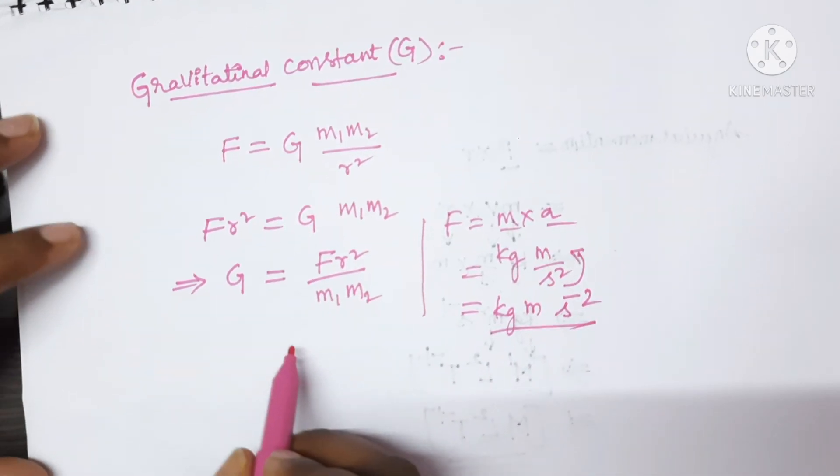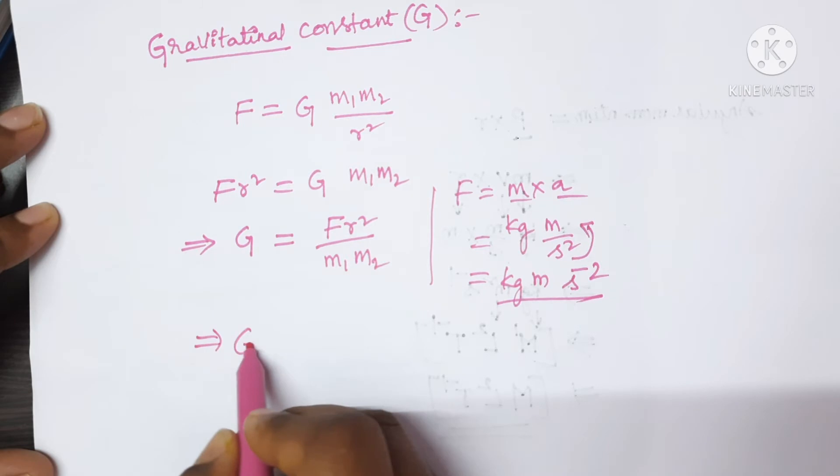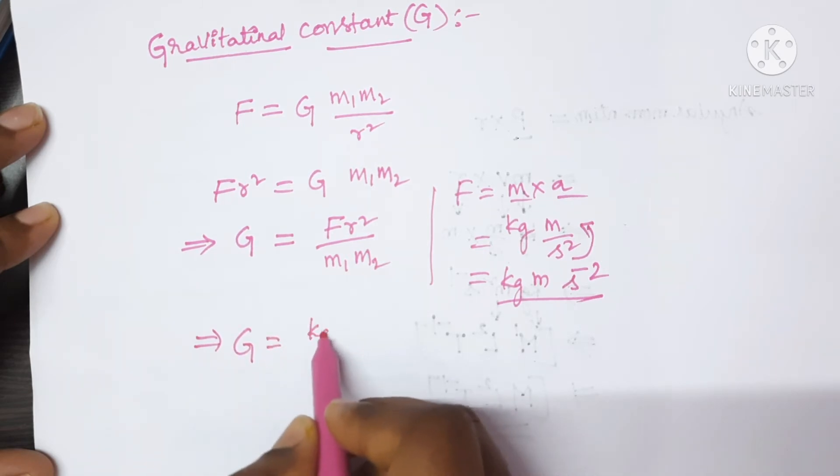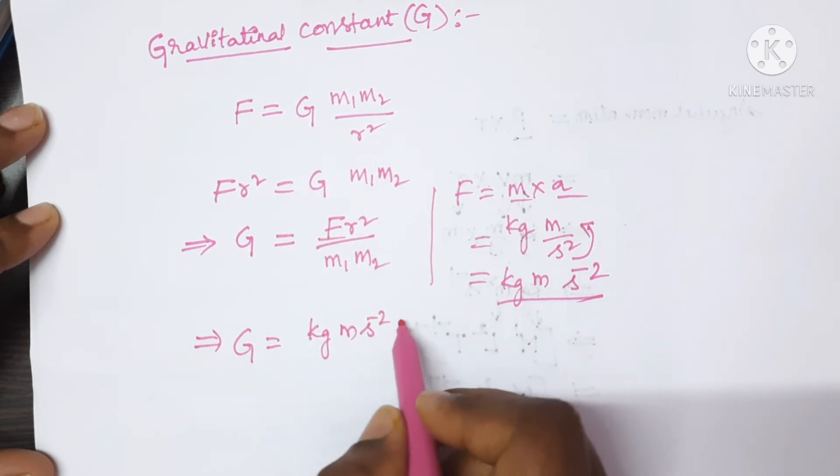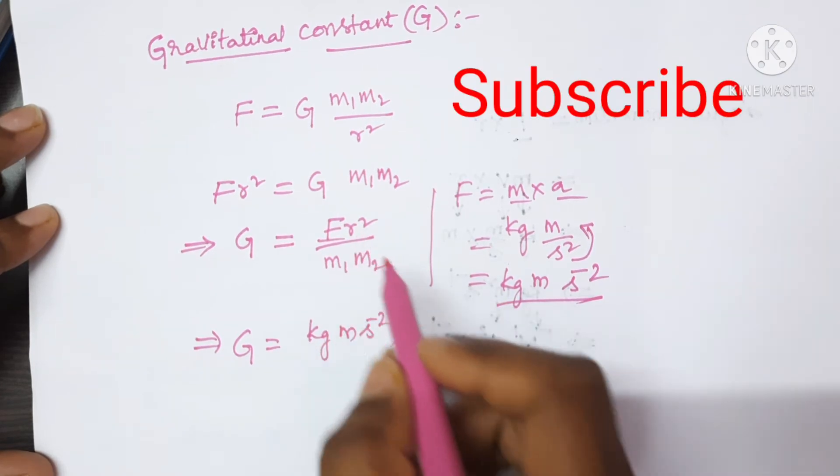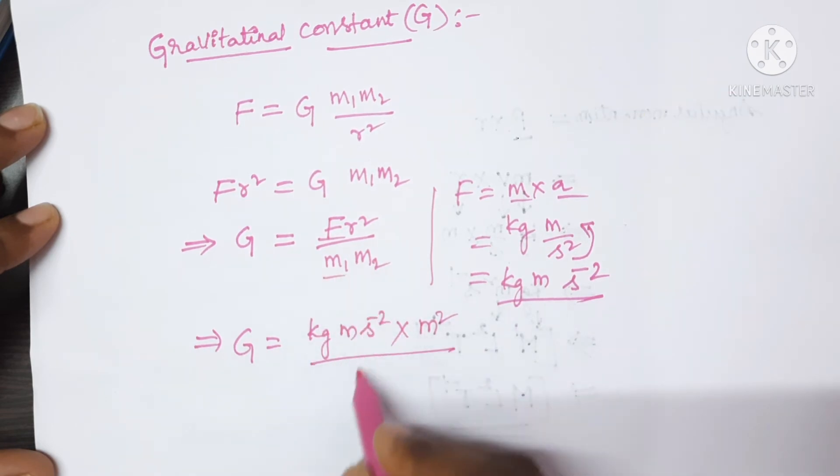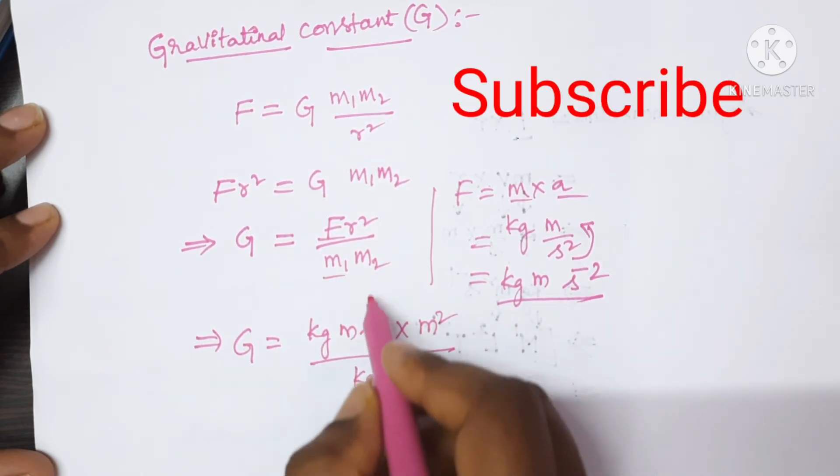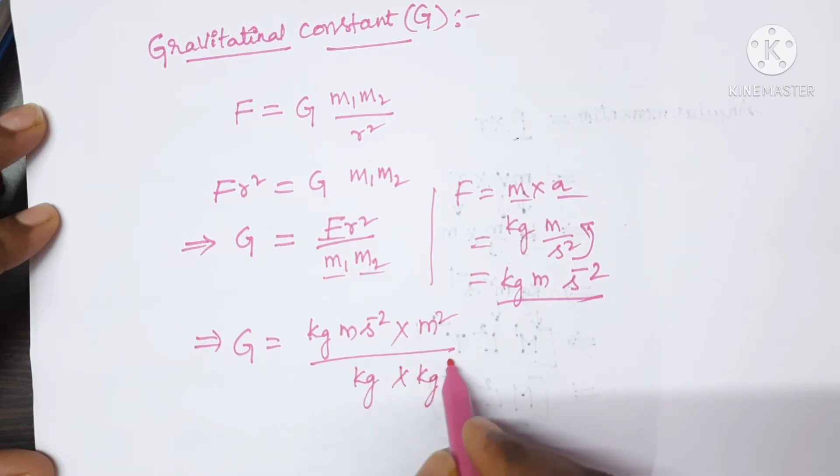Write this in place of the force. So G equals kilogram meter S to the power of minus 2 in place of force, times R is the distance between the two particles measured in meters square, divided by M1 and M2 which are both in kilograms. One kilogram will get cancelled.